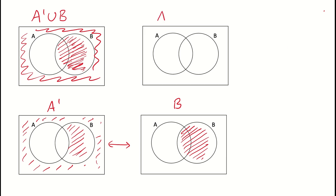Now what if I wanted the complement of A where it intersects with B? Again, let's look at our complement of A and our B Venn diagrams and see what they have in common — where do they intersect? The only bit that's common between these two Venn diagrams is this space here. So you can see the difference between the union and the intersection with the complement of A and B.